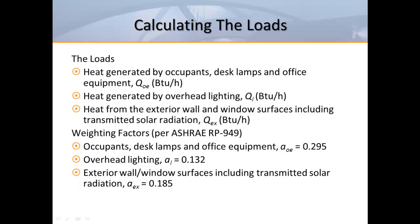In order to determine the airflow requirements for a displacement system, we need to look at all the loads in the room and then determine how much of each load will reach the occupied zone. RP 949 provides the weighting factors that should be used. It's important to understand that loads both inside and outside the occupied zone will have differing effects on the comfort of an occupant. ASHRAE guidelines allow us to accurately estimate these effects.